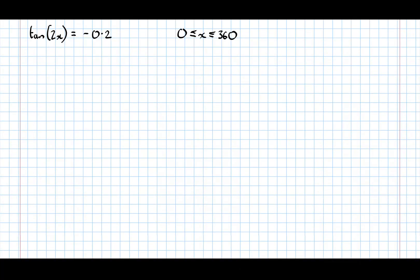In this tutorial video, we're going to have a look at solving trigonometric equations that are just slightly more complicated than sin of x equals, or cos of x equals, or tan of x equals. In this particular question, we're going to solve tan of 2x equals minus 0.2.